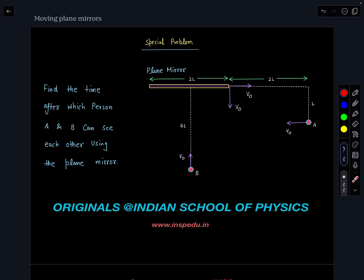The problem was posted in the community post and telegram groups. We have to find the time after which persons A and B can see each other using the plane mirror. A is moving towards the left, B is moving towards the mirror, and the mirror has length 2L. This length is 2L and here this length is 2L. The mirror is also moving with velocity V₀ i minus V₀ j cap.